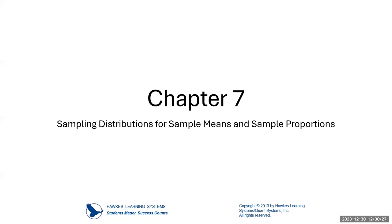Welcome back everyone. This video we are going to overview chapter 7, specifically sampling distributions for sample means and sample proportions. A lot of what we did in chapter 6 is going to come back, so there's going to be some familiar themes, but we also have a little bit of additional thought to take into consideration. I'm pulling these problems and graphics from our publisher, HAWKS Learning Systems, and copyright information is below.